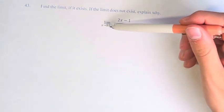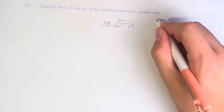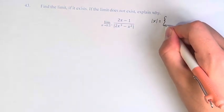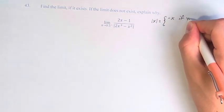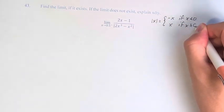However, to do that we have to get rid of the absolute value first. We know that the absolute value of x is equal to negative x if x is less than 0, and x if x is greater than or equal to 0.